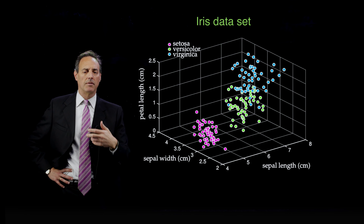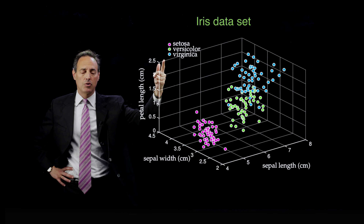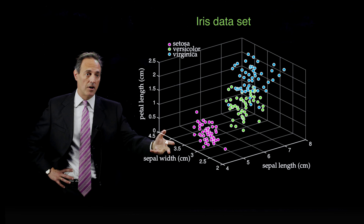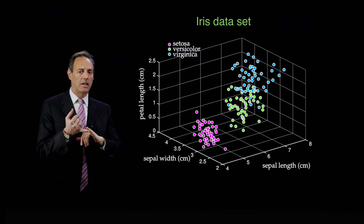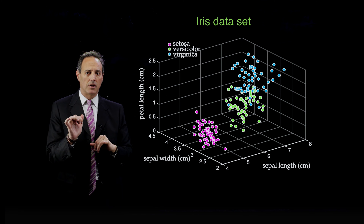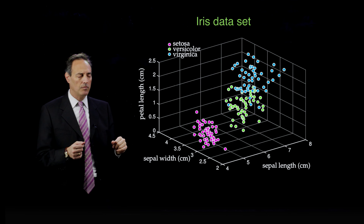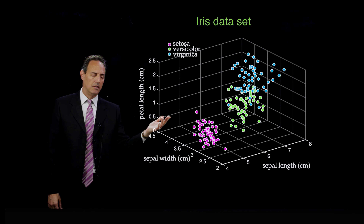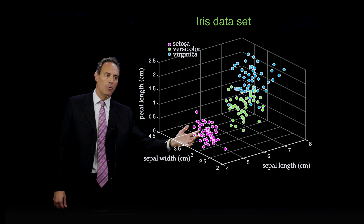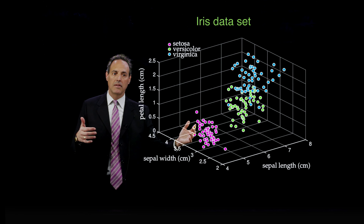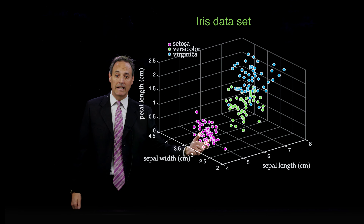There are different iris varieties — setosa, versicolor, and virginica — each denoted by either magenta, green, or blue balls. This is what they look like in this feature space. This is already getting to the idea of classification and clustering. The classification is provided: three different varieties of irises. The clustering is evident by inspection. The magenta setosa irises are all grouped together, having similar sepal length, sepal width, and petal length.